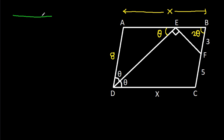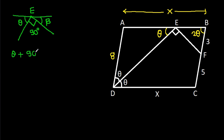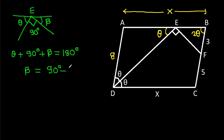Now at point E, this angle is theta, this angle is 90 degrees. Suppose this angle is beta. Then theta plus 90 degrees plus beta equals 180 degrees.